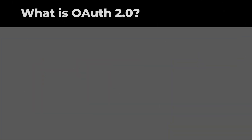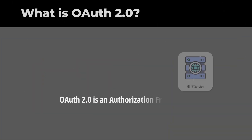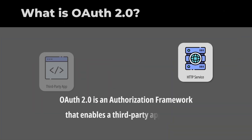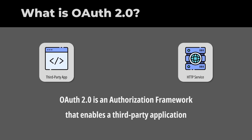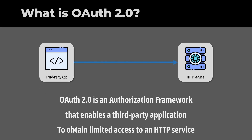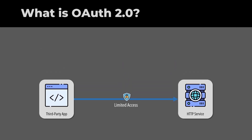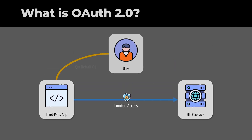OAuth 2.0 is an authorization framework that enables a third-party application to obtain limited access to an HTTP service. The application might request access on its own name, or also on behalf of a user.